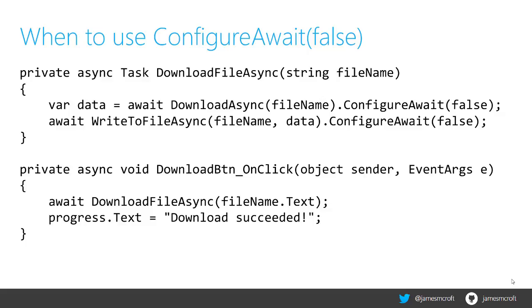You don't actually need the second ConfigureAwait(false) because the context has already been changed by the first one, but it's always best practice to do this if you don't care about the result.